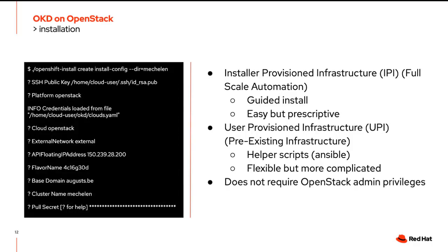There are multiple ways to install OKD. There's the fully automated Installer-Provisioned Infrastructure model — guided, easy, but prescriptive — which we'll use today. There's also a UPI model, which is fully supported on top of OpenStack. That uses pre-existing infrastructure; it's flexible but more complicated, though we supply plenty of helper scripts.